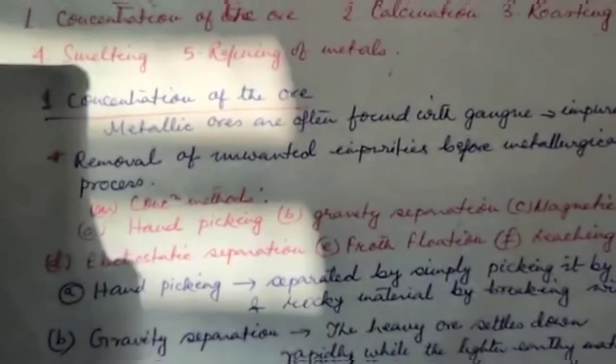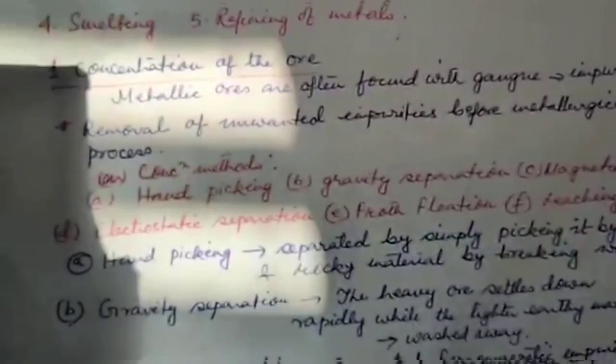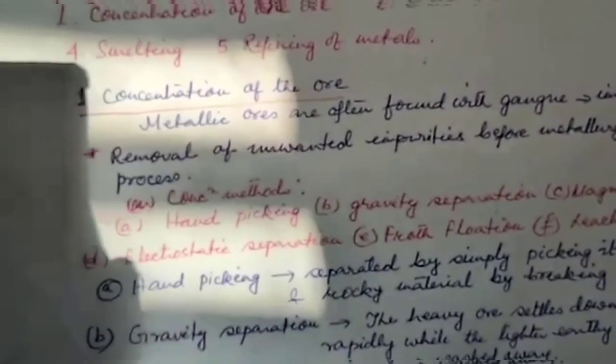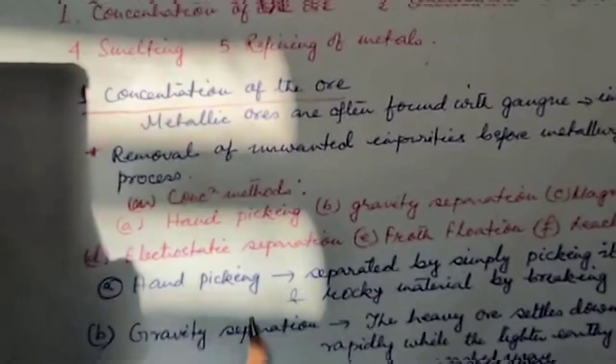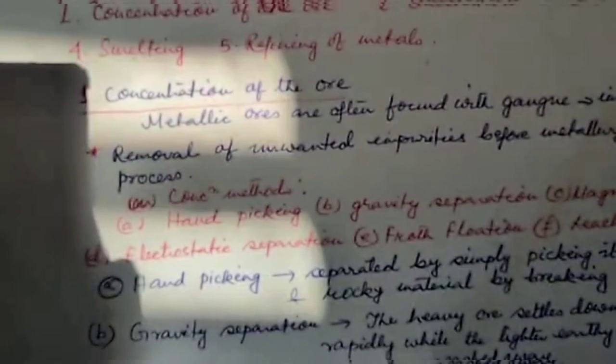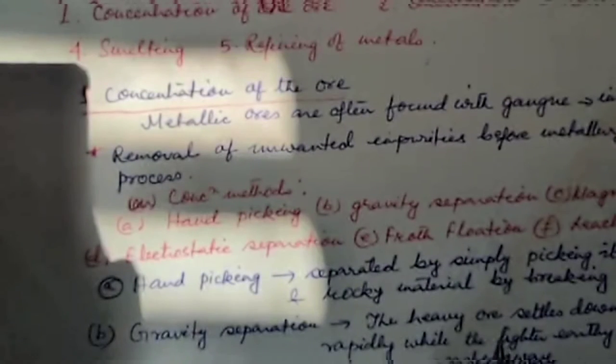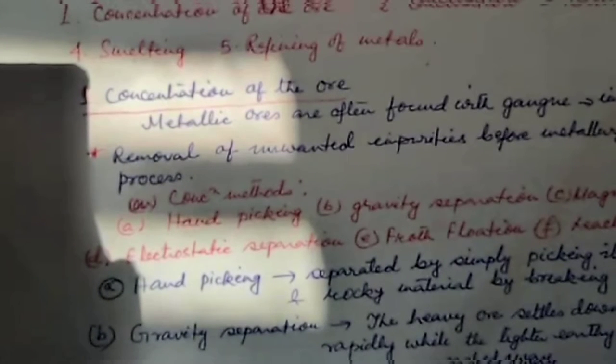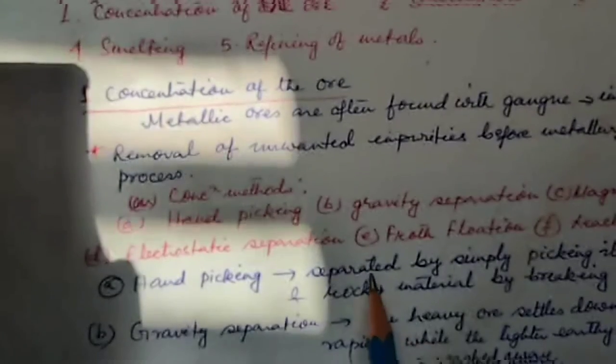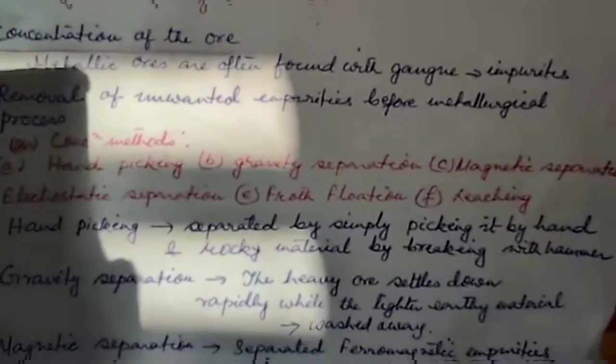Hand picking: the ore is separated from the gangue in a sufficient degree of purity by simply picking it by hand and then eliminating the adhering rocky material by breaking with hammer.